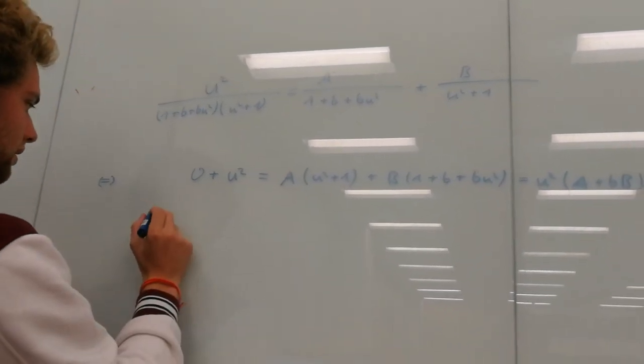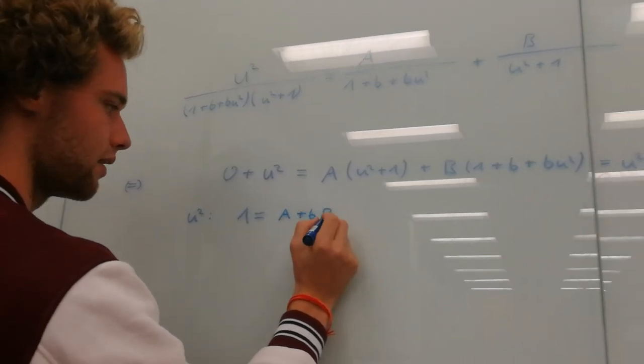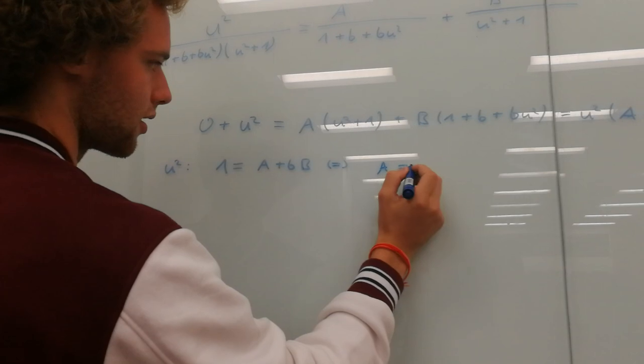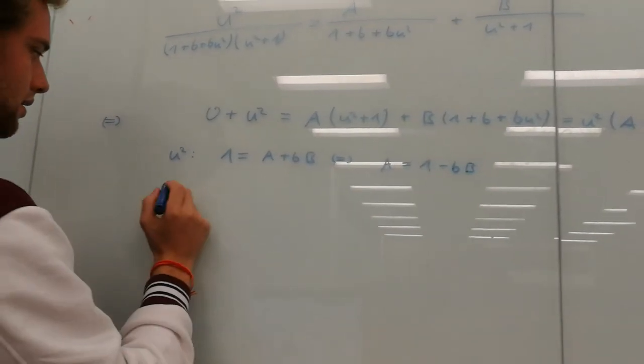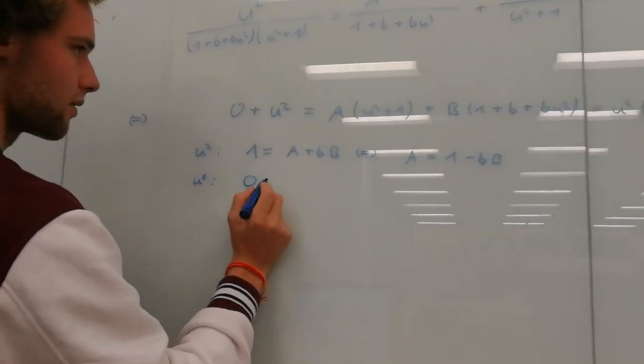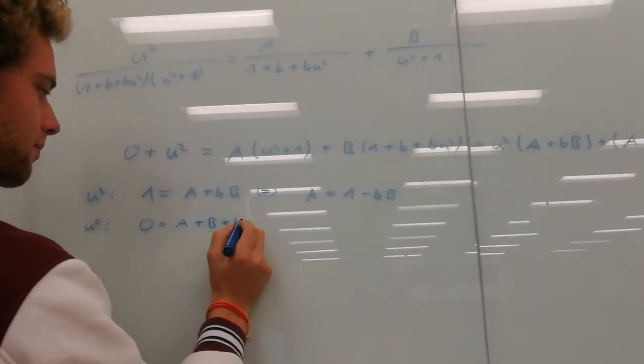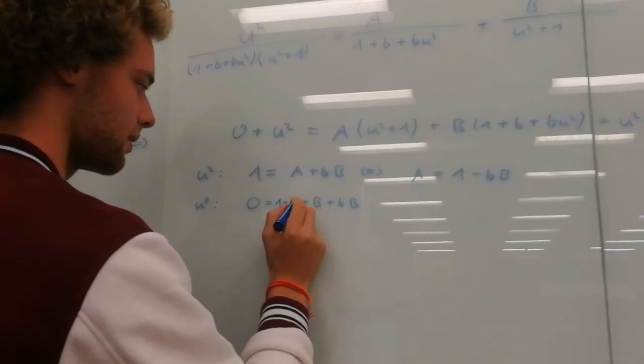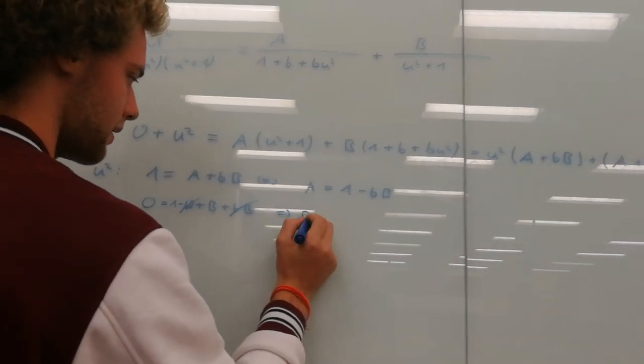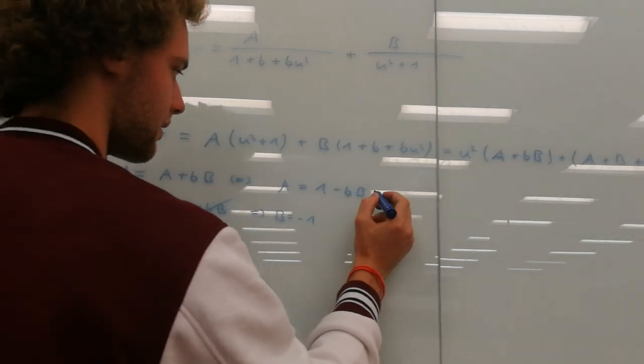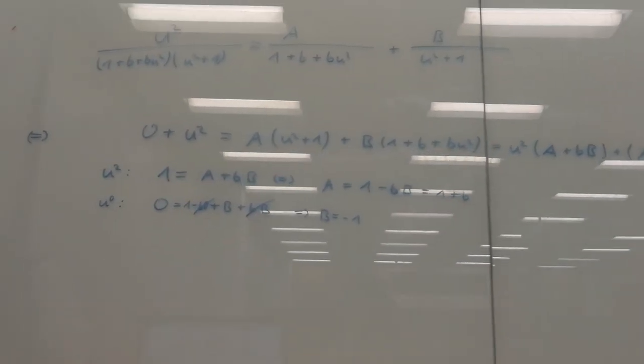So let's first have a look at u squared. U squared, the coefficient is 1 equals A plus BB. So we can express A in terms of capital B, it's just 1 minus B capital B. Now we can look at the constants. Zero equals A plus capital B plus BB. And now we have this expression for A, so it's 1 minus BB. This cancels out, and we can bring this on the other side, so we get B equals minus 1. Now we can plug this in here, so we have A equals 1 plus B. Just quickly have a look if that's correct. Yes, it is.